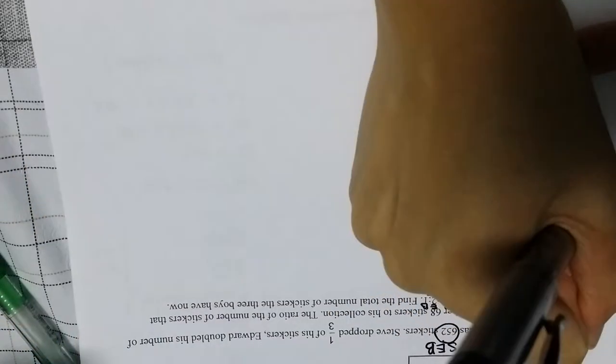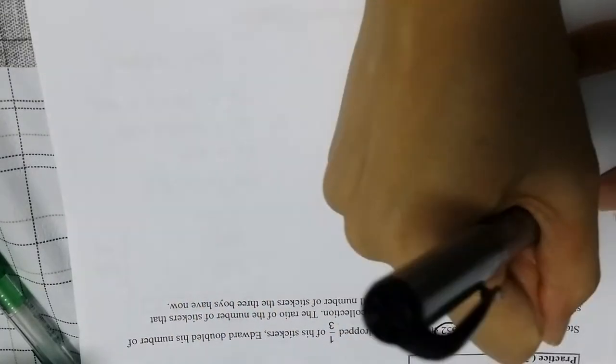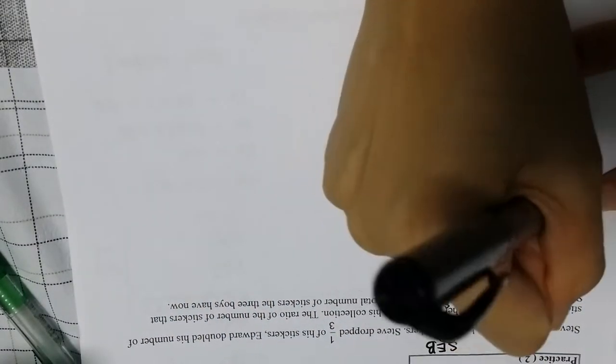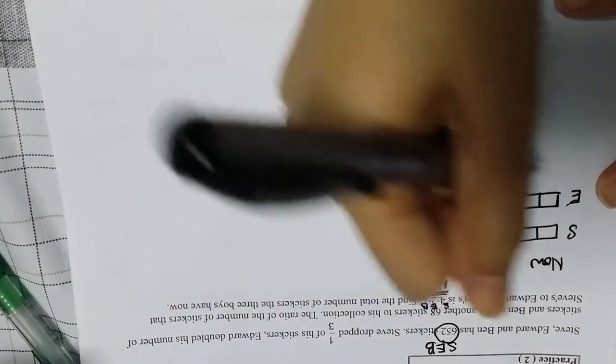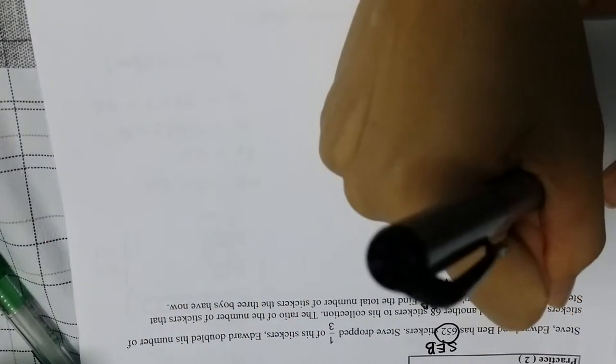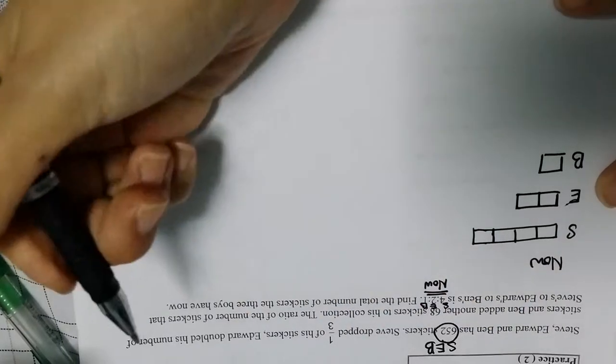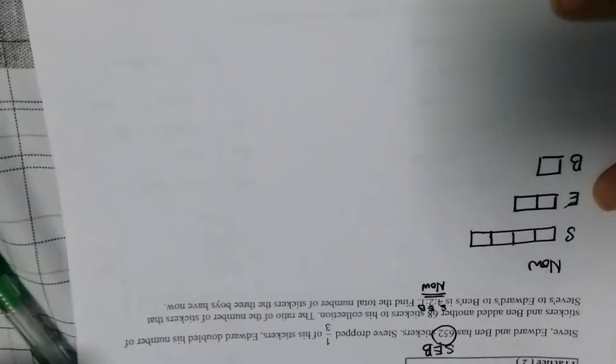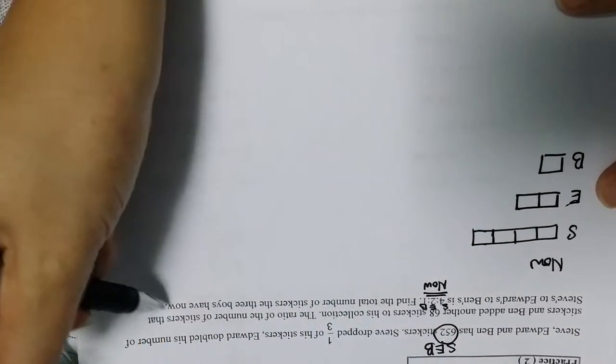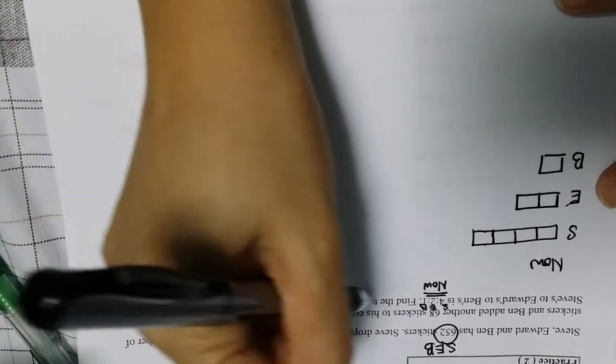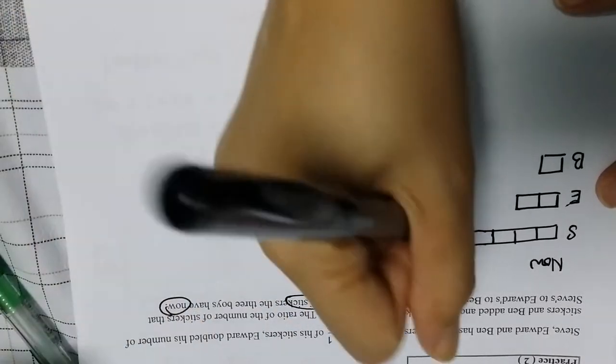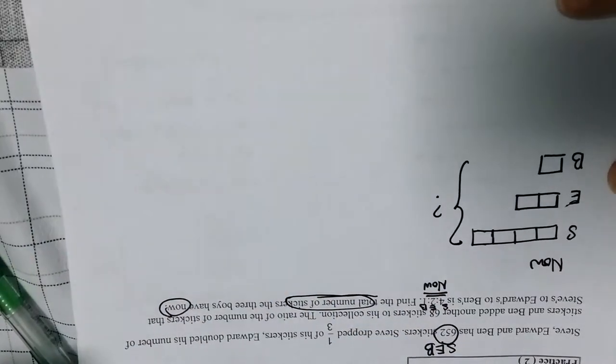It's to E, will be 2 units. It's to Ben, Ben is 1 unit. Okay, so this is what happened now. And again, find the total number of stickers the 3 boys have now. Okay, total number of stickers the 3 boys have now. So this is what you're interested to look at at the end.